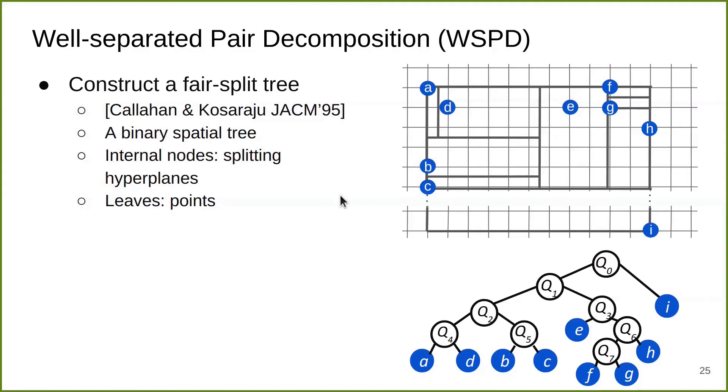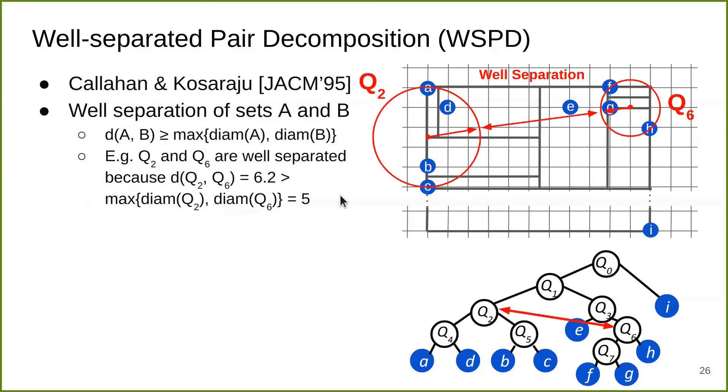With this fair split tree, I'm going to define separation. I'm going to use the notion of point set and tree node exchangeably. In my example, I'm going to use node Q2 and Q6, which contain leaf nodes ADBC and FGH. I visualize the two points that represent them on the 2D diagram. What separation is saying is that these two point sets are well separated if the distance between their bounding spheres is large enough with respect to the sizes of these two sets.